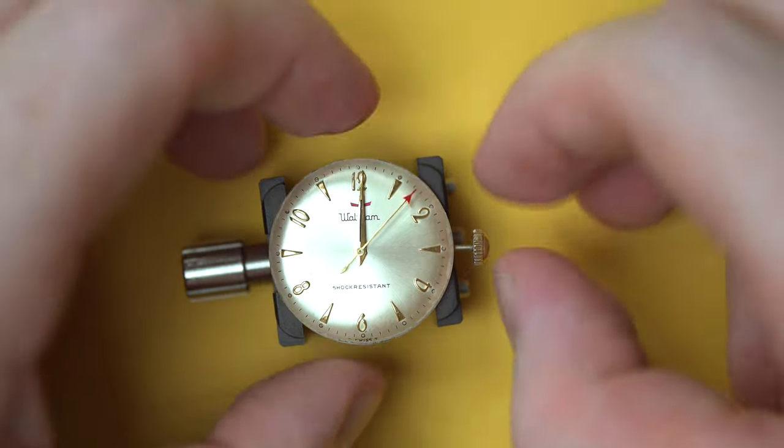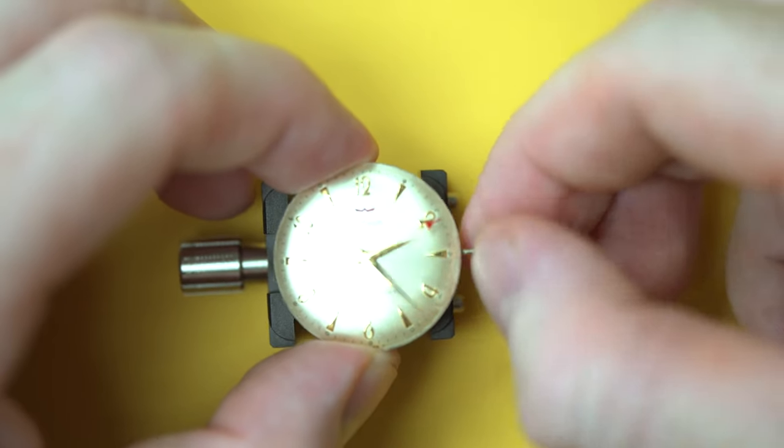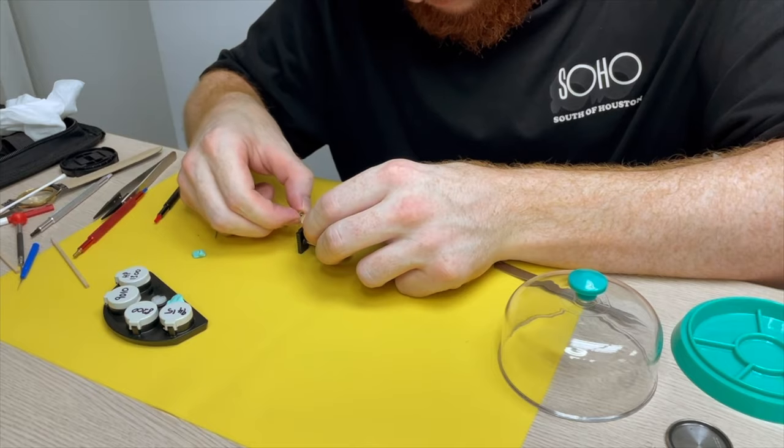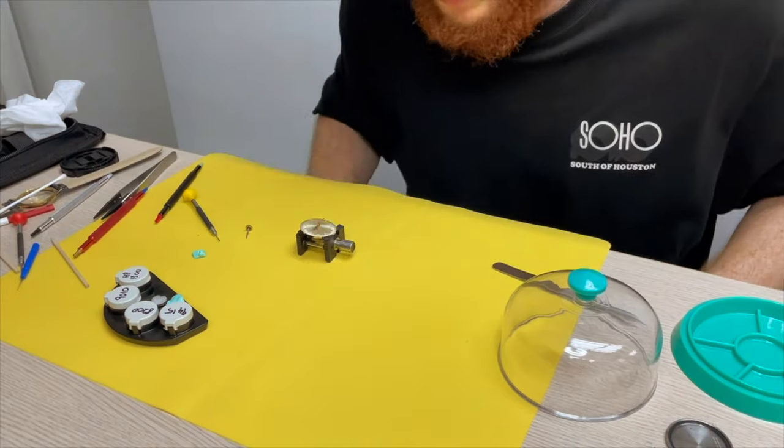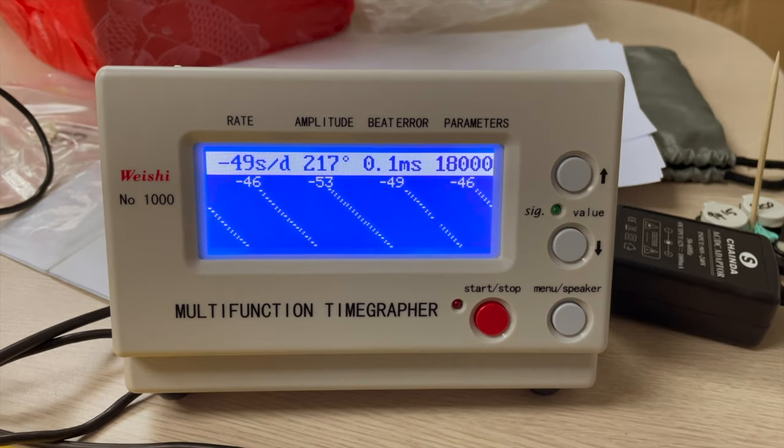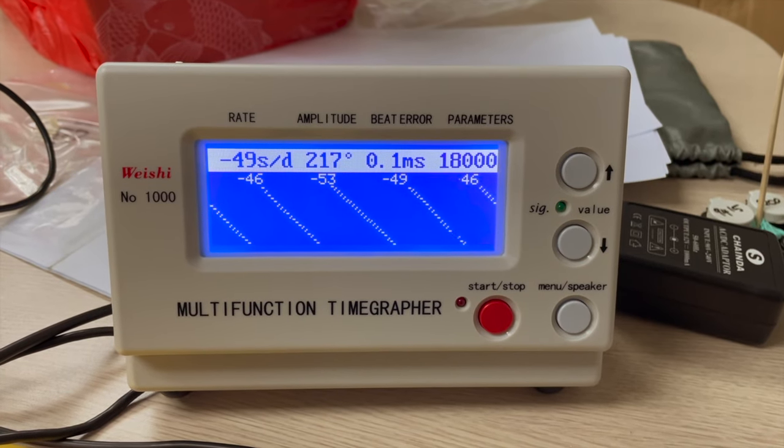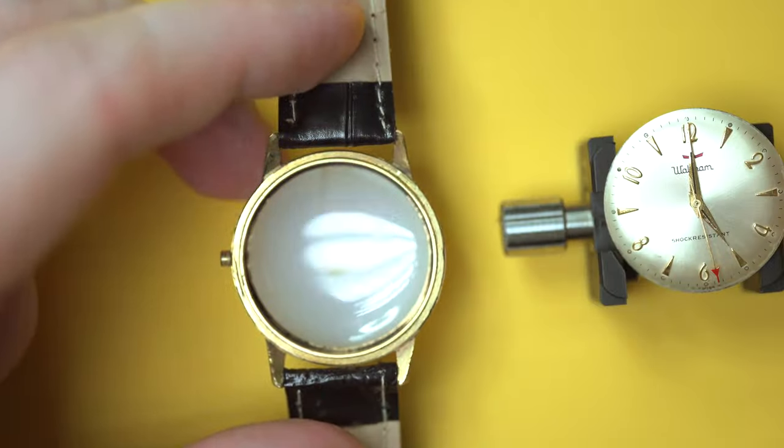Now I'm just going to give the hands a little setting check so I'll give them a little wind round through different positions just to make sure they don't lose time. And there we have it so once we check the watch back on the time grapher that looks alright. That didn't look too bad but the amplitude is good the beat error is very good and this watch is running a lot better than it did when we initially looked at it so I'm happy.